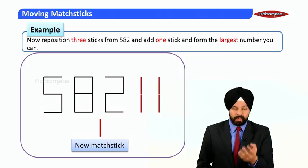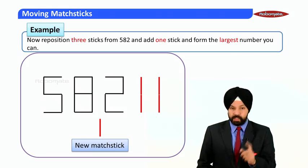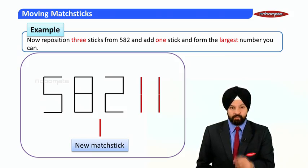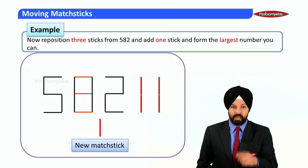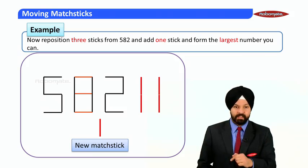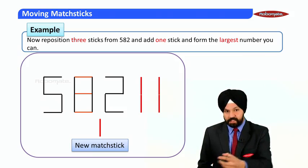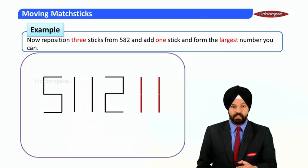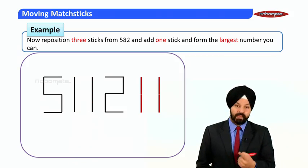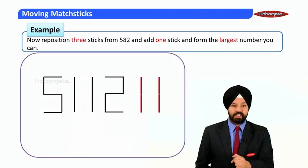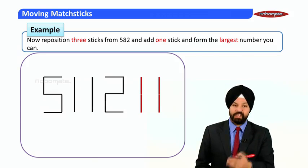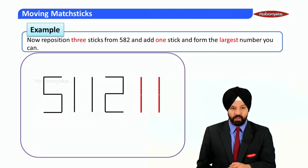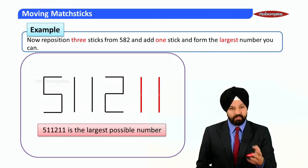Although the number 582 has got limited options of picking three matchsticks, it is very important to know that there is a number 8 from where we can pick three matchsticks, and those three matchsticks are highlighted in red. The moment you pick these three matchsticks, you can see the magic. The magic is that now the net resultant is a six digit number that is 511211. Now the net answer is 511211, which is the largest possible number.